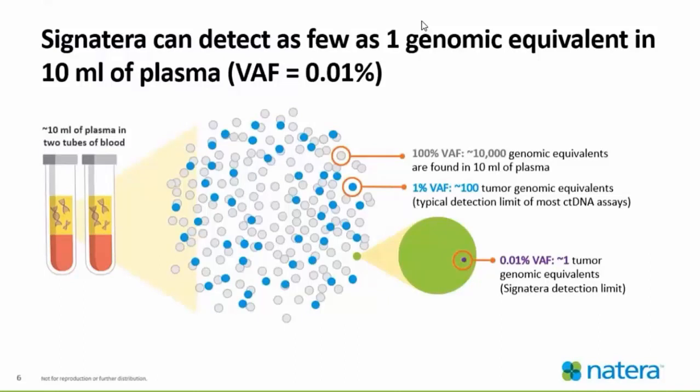There are about 10 mls of plasma in two tubes of blood. What this diagram is really showing us is that at the smallest level, we can still test for DNA. We can see that at 0.01% VAF, or variant allele frequency, there is approximately one tumor genomic equivalent, which is the Signatera detection limit. It is a highly sensitive test, and with this technology we are able to pick up DNA at a very small level.